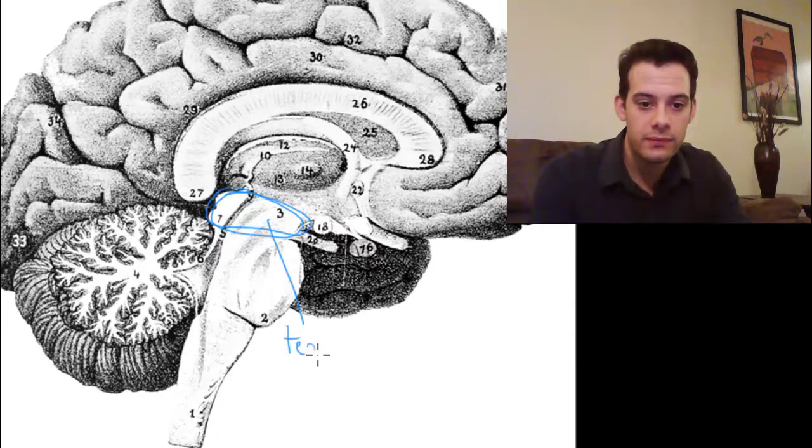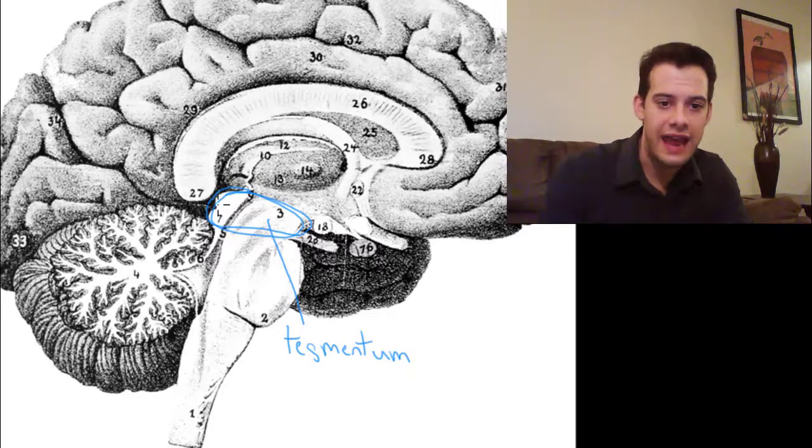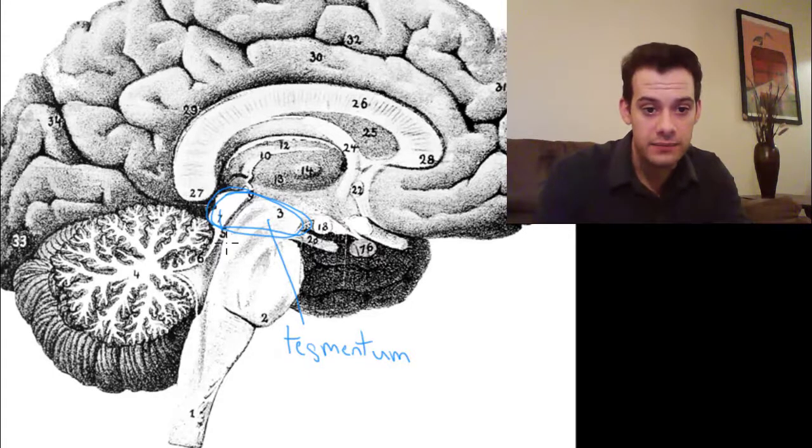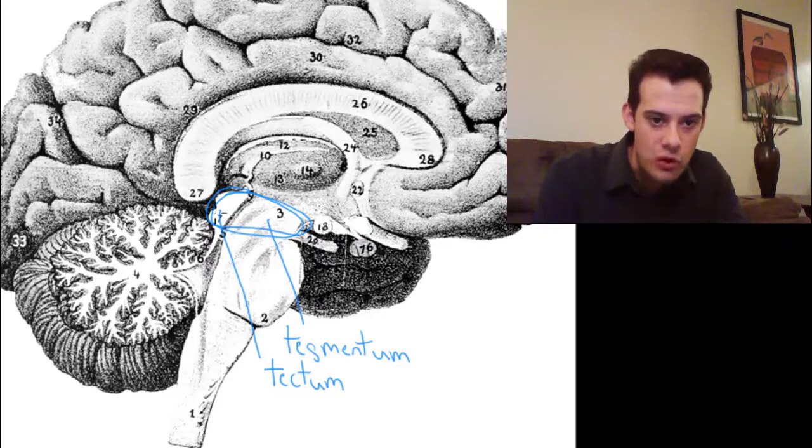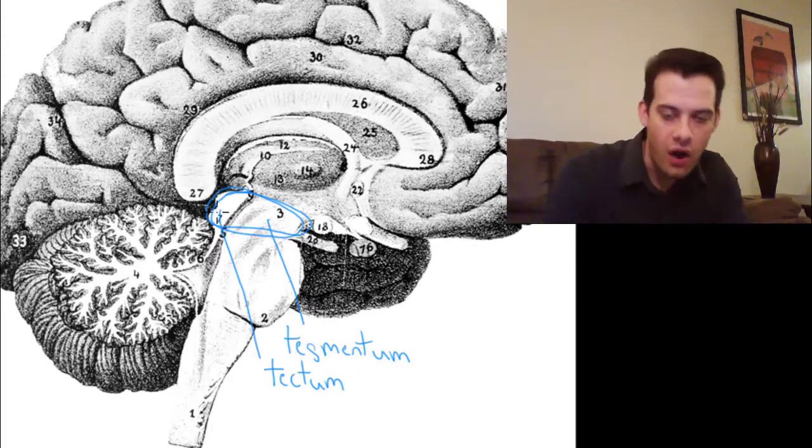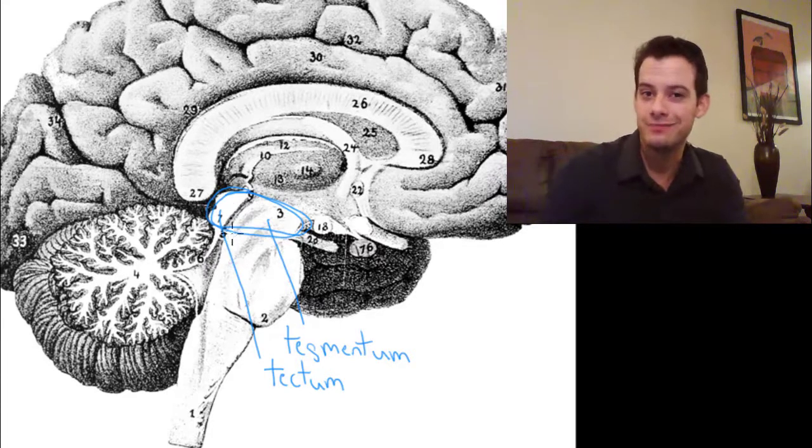this is the tegmentum and then here at the back of the brain on this end, the back end of the brainstem here, this is the tectum. The tectum refers to this group of structures here, you see these little protuberances here, these are called colliculi and the tectum refers to all of these together and they have individual names that we don't need to worry about at this point.